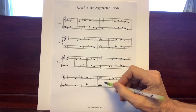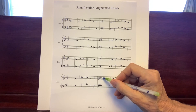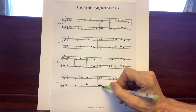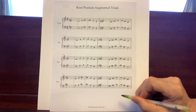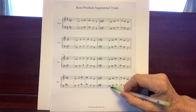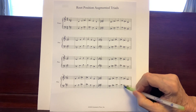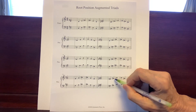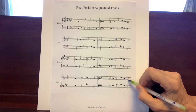Here's F-sharp augmented. The major was F-sharp, A-sharp, C-sharp, so we had to raise the C-sharp to a C-double-sharp. Let's read the bass clef: F-sharp, A-sharp, C-double-sharp. Melodically: F-sharp, A-sharp, C-double-sharp — C-double-sharp, A-sharp, F-sharp. Treble clef: F-sharp, A-sharp, C-double-sharp — C-double-sharp, A-sharp, F-sharp.